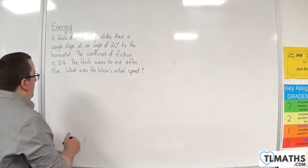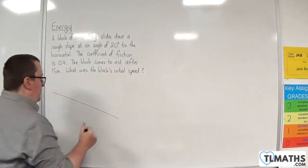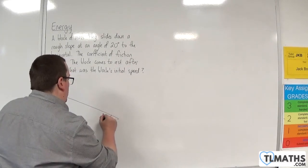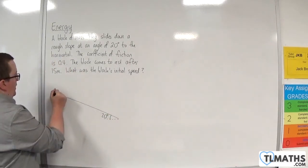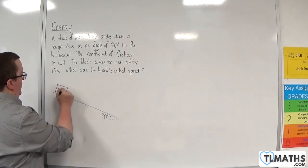Okay, so let's draw a diagram so we can visualize what's going on. So here's my slope. That's 20 degrees. We have the block, which has a mass of 4 kilos.